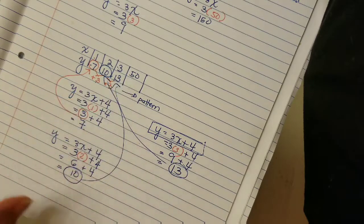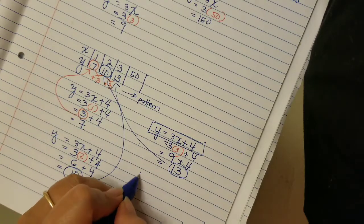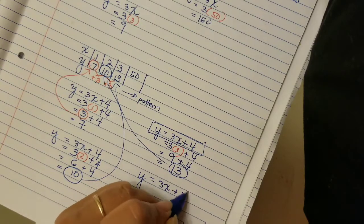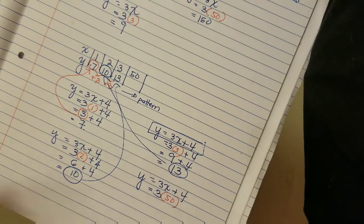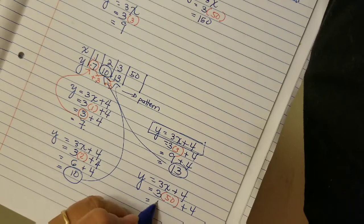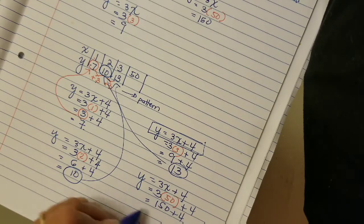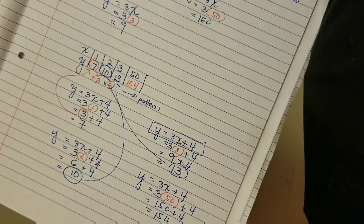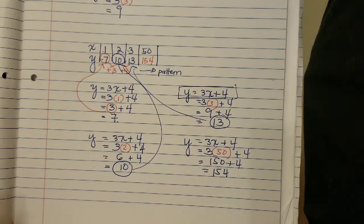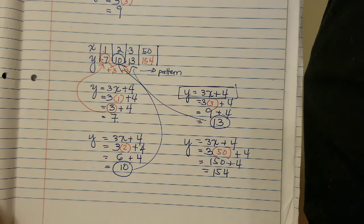Now you can substitute x equals 50 into the equation: y equals three times 50 plus four, equals 150 plus four, equals 154. So if x is 50, y would be 154. It just takes practice — if you follow the steps, you will be more accurate. That's all for now, goodbye!